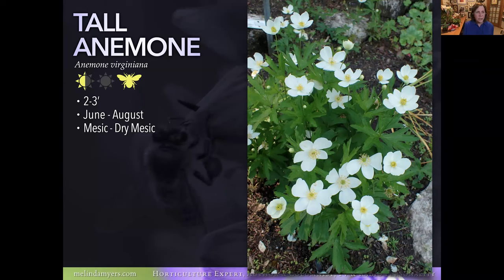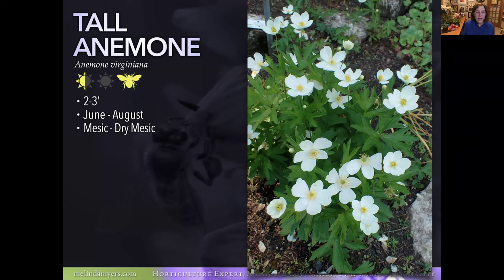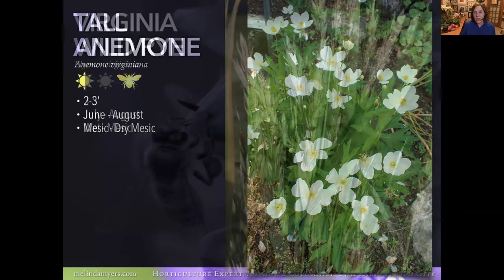The tall anemone takes part to full shade. Look at those beautiful white flowers — white flowers in a shade garden really brighten things up. Nice leaves all season, and when they set seed, there are little cottony tufts on the end of the flower stem that I find attractive as well. Great pollinator plant and a nice choice for the moist, well-drained portions of your rain garden.